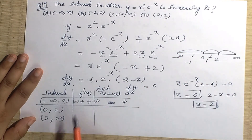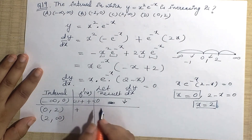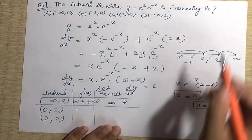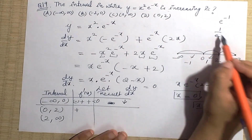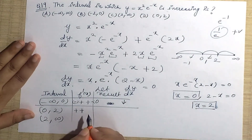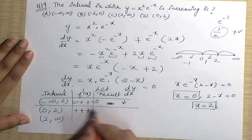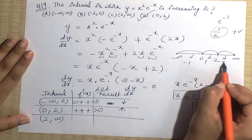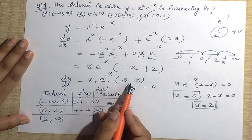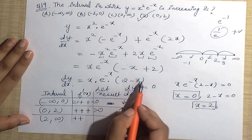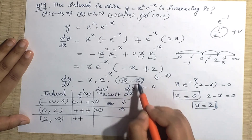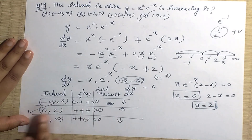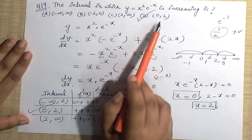For interval (0, 2), take x = 1: x is positive, e^(-1) = 1/e is positive, and (2-1) = 1 is positive. All terms positive, so f'(x) > 0 — increasing on (0, 2). For interval (2, +∞), take x = 3: x and e^(-x) are positive, but (2-3) = -1 is negative. So f'(x) < 0 — decreasing on (2, +∞). The function increases only on (0, 2).